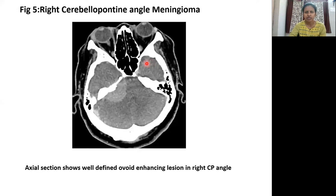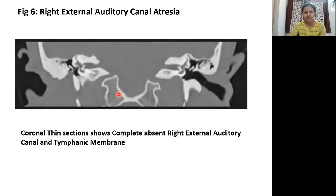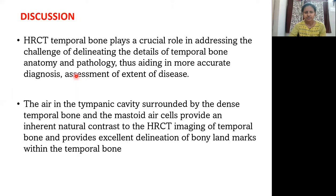This is a case of right cerebellopontine angle meningioma. Here we see a well-defined enhancing lesion in the CP angle. This is a case of right external auditory canal atresia. In this image, we see a complete absence of the external auditory canal and the tympanic membrane.